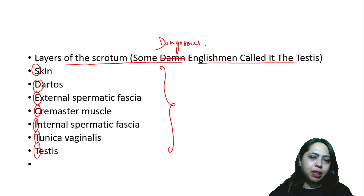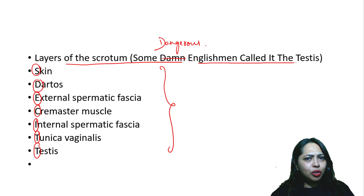Next: the layers of the scrotum. The mnemonic is: 'Some Dangerous Englishman Called It The Testis.' S — Skin. D — Dartos muscle. E — External spermatic fascia. C — Cremasteric fascia. I — Internal spermatic fascia. T — Tunica vaginalis. T — Tunica albuginea (the covering of the testis itself). These are the coverings of the scrotum. Repetition helps you never forget — even after getting your PG seat.